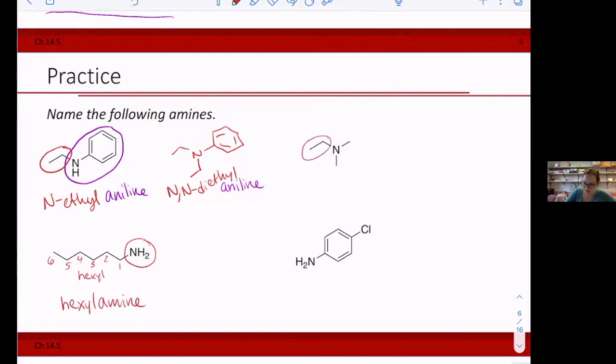Over here, we have an ethyl group and then methyl. And then we have two of those. So ethyl comes before methyl in the alphabet. So I'm going to have ethyl dimethyl amine as my name.